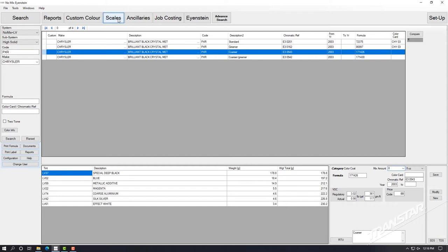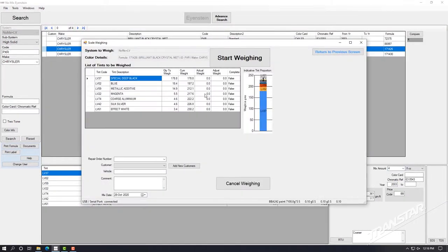Click the Scales button to access the products to be weighed for mixing. Click Start Weighing to send the formula to the scale. Einstein shows a list of toners arranged by volume to be added to the formula as needed.